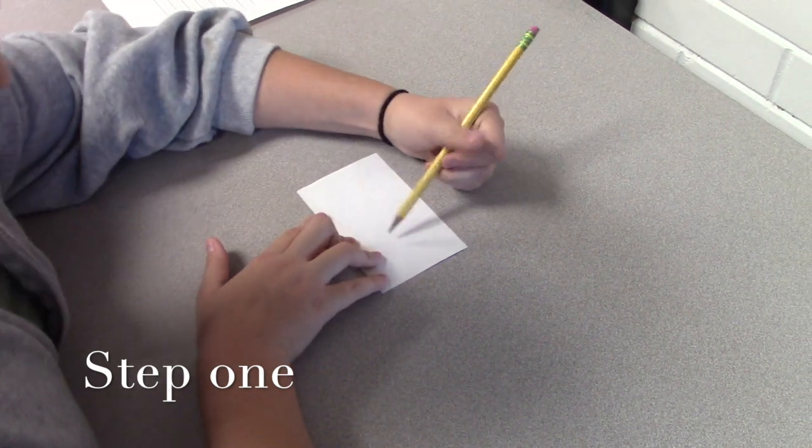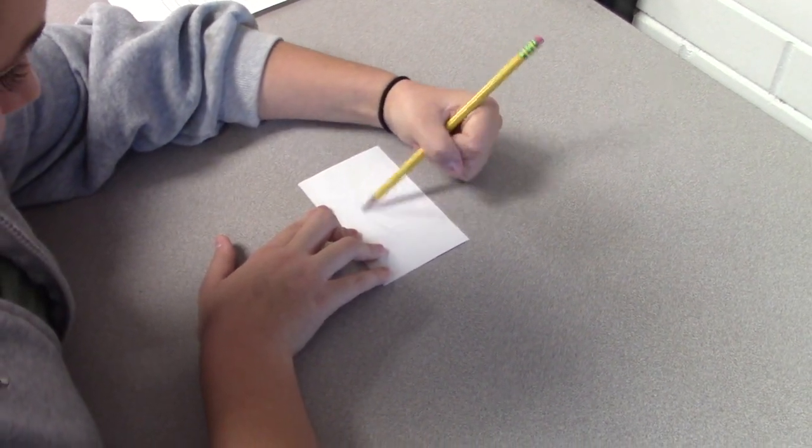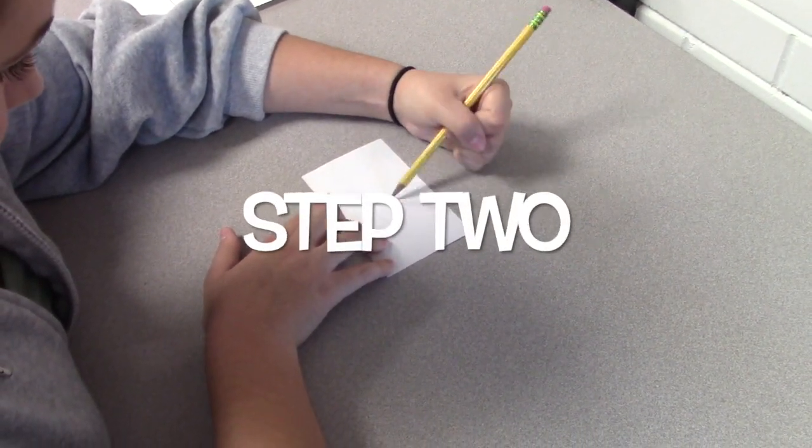How to Draw an Eye. First, get a piece of paper and a writing pencil. Then, draw two curved lines.